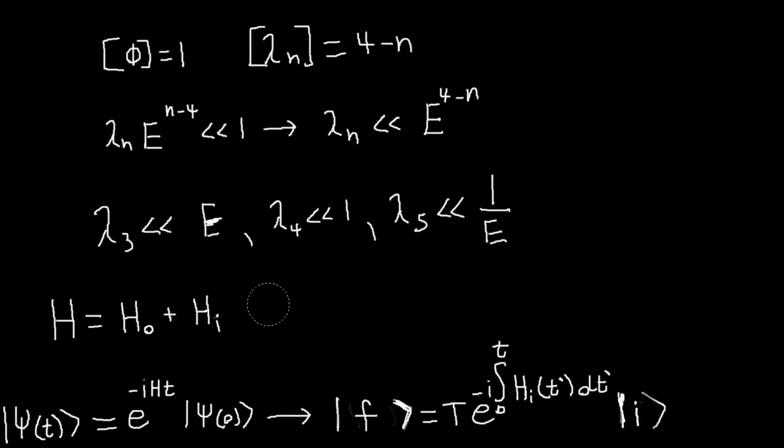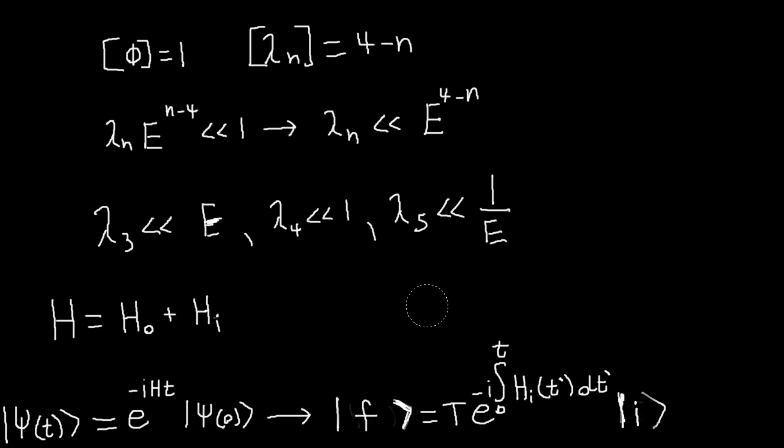And basically, so what we're going to be doing is, given some initial state and this operator, our interacting term, we can find what this interaction term, or how it transforms our initial state into a final state.